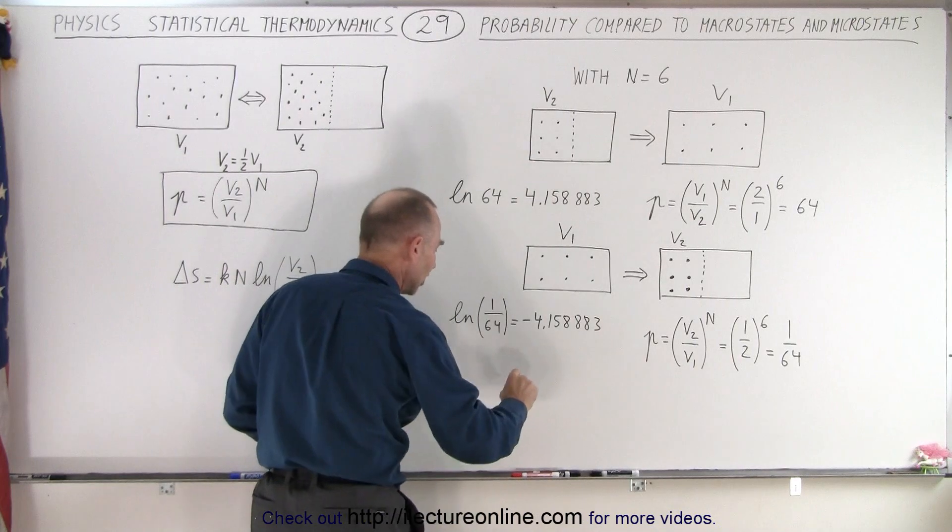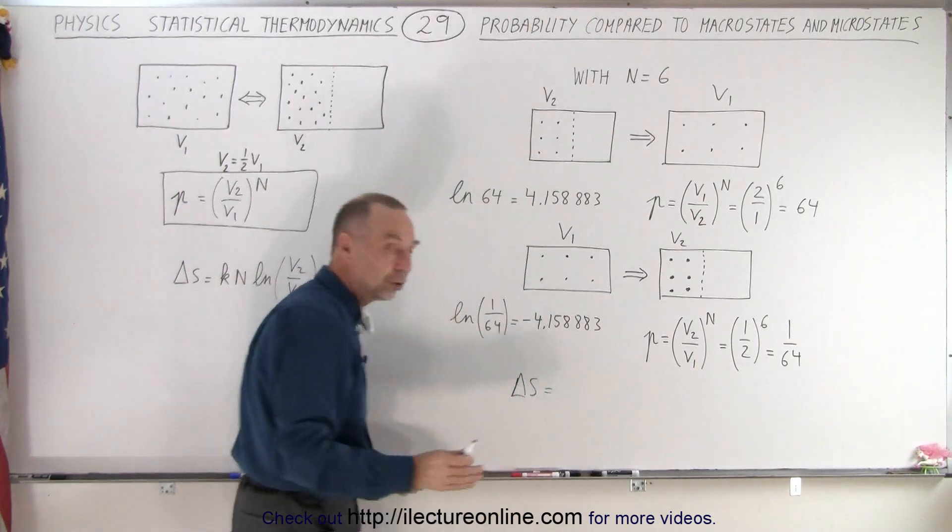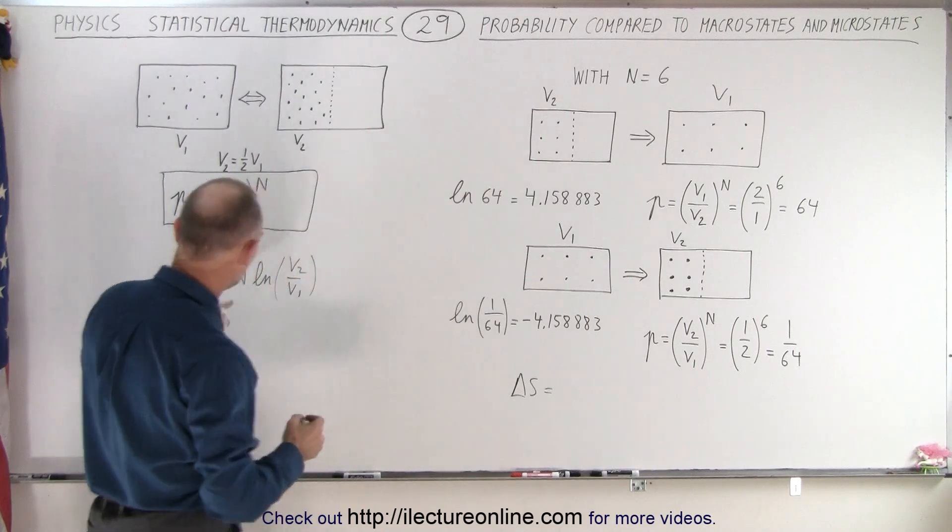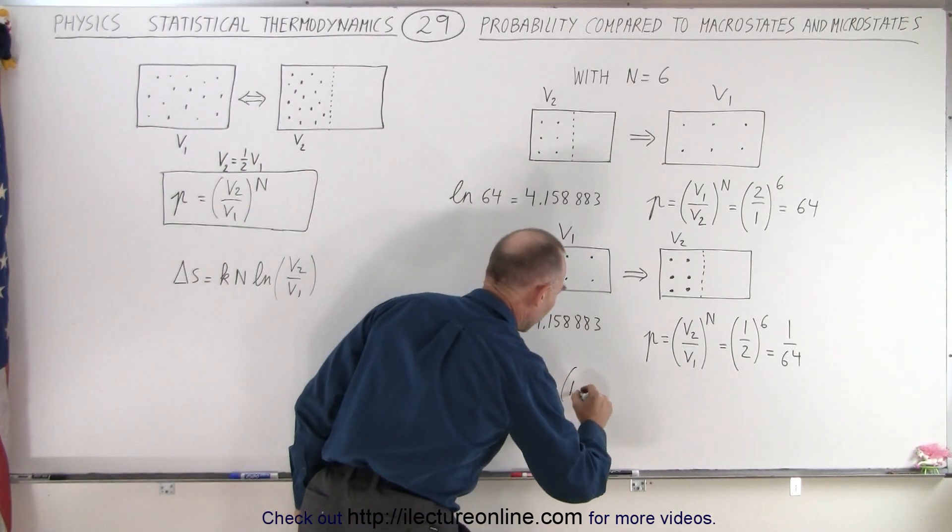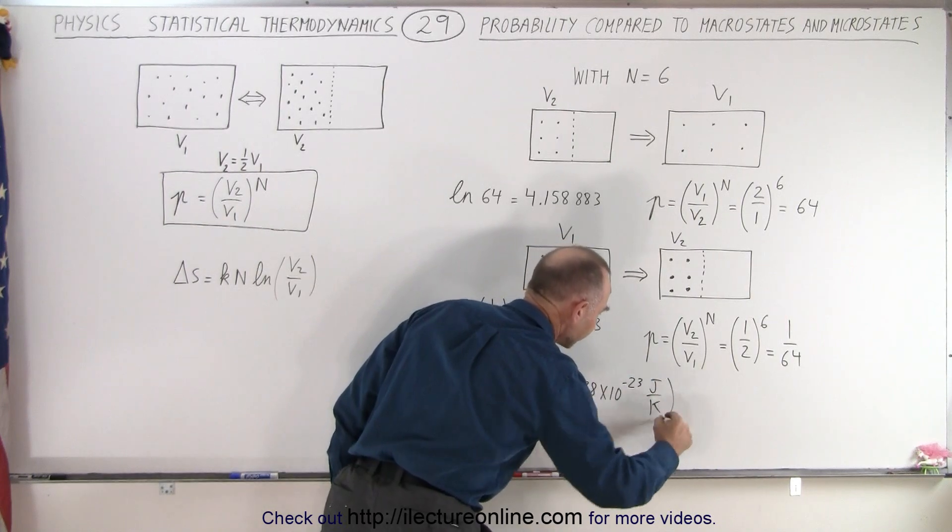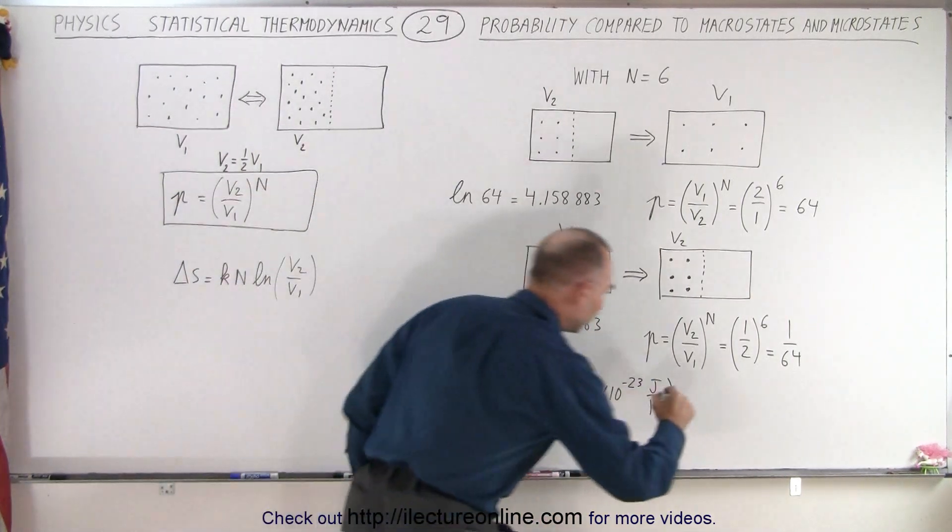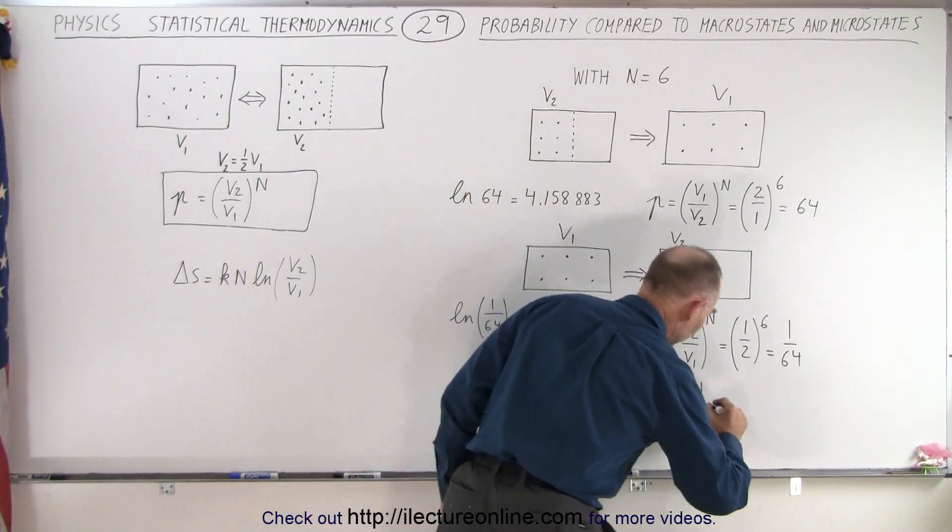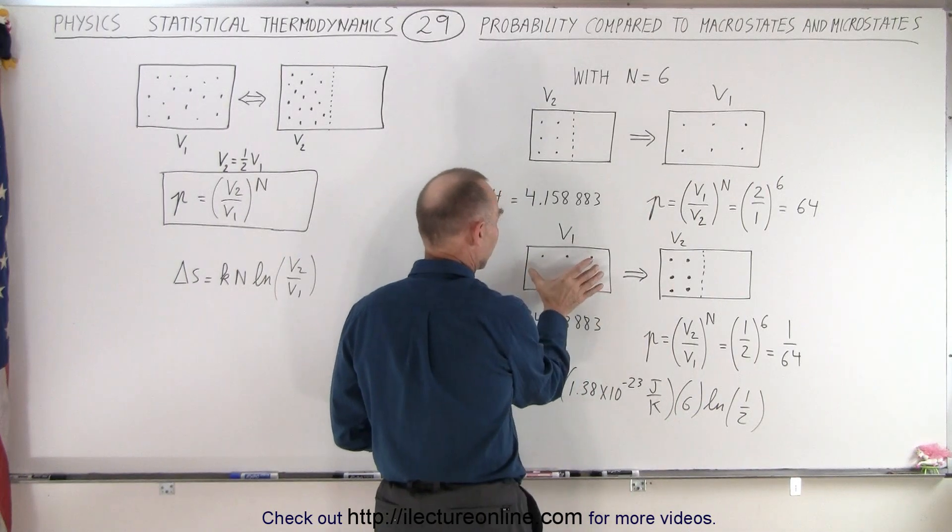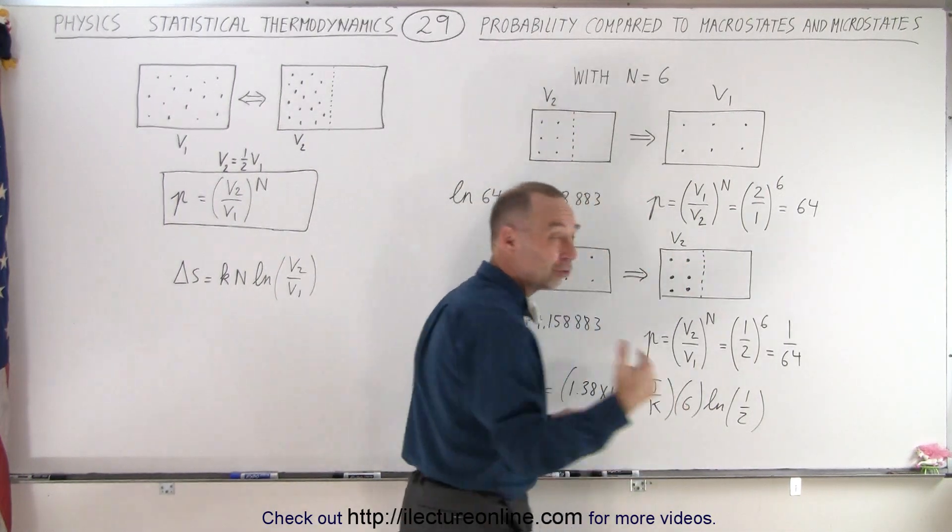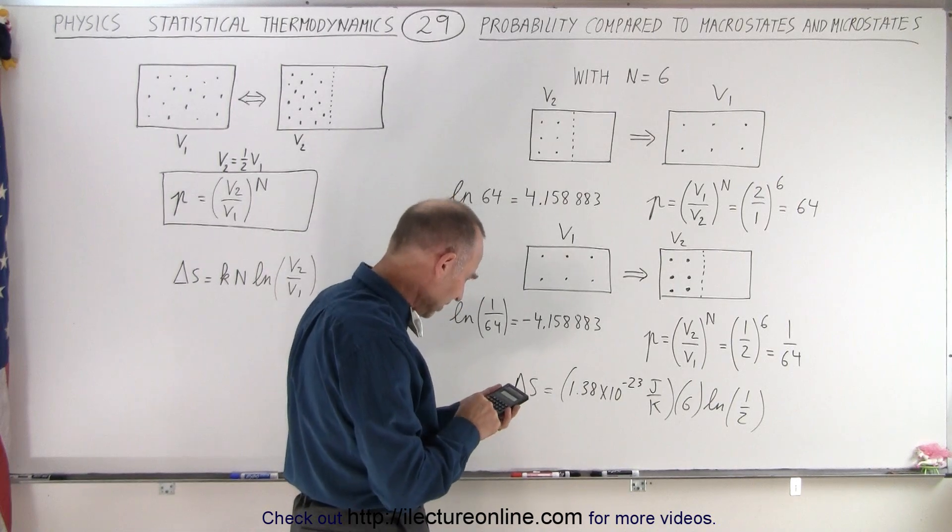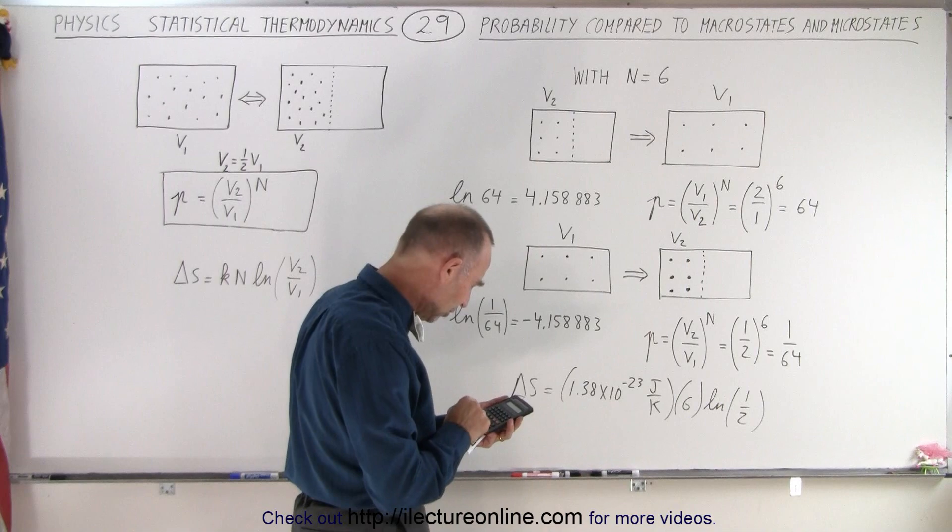Now, I should do one more thing. I should calculate the change in entropy for this example, because then we're going to show you the table. You're going to wonder, well, how does this number relate to the numbers in the table of the macrostates and macrostates that we're then going to go to? So, again, we're going to use this equation. So, K is 1.38 times 10 to the minus 23, and that would be joules over Kelvin. The number of molecules would be 6, and then the natural log of, well, let's go the natural log, the natural log of 1 half. And so that means we're going to go from having a more disordered state to more ordered state, that should give us a negative entropy change.